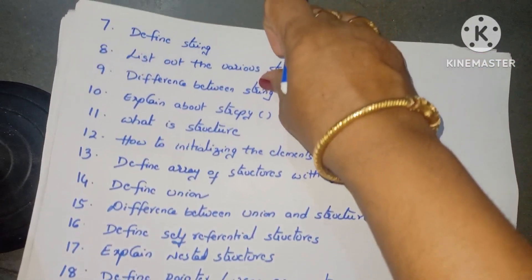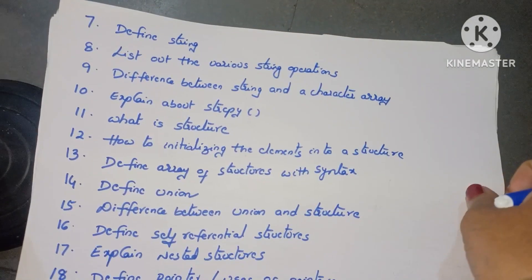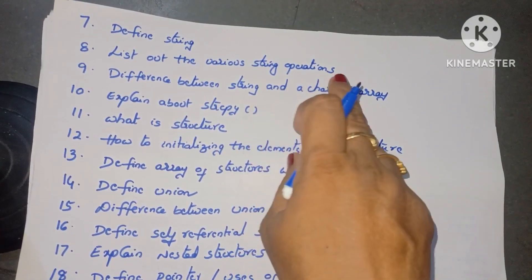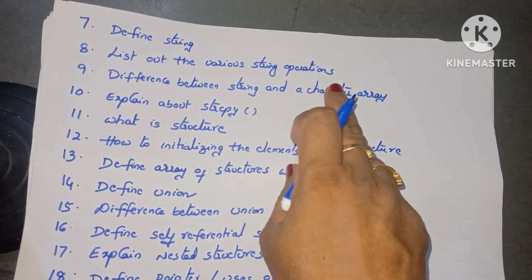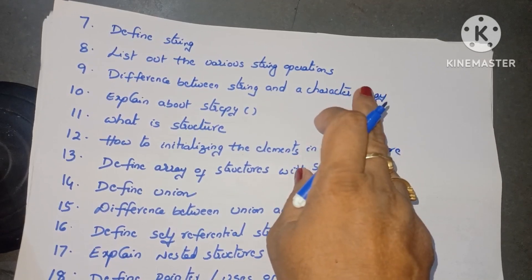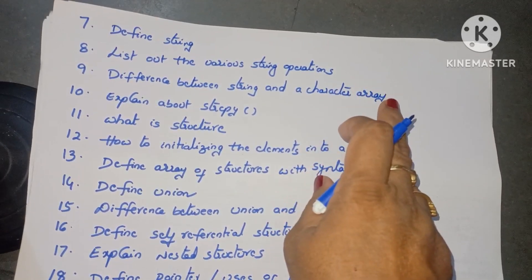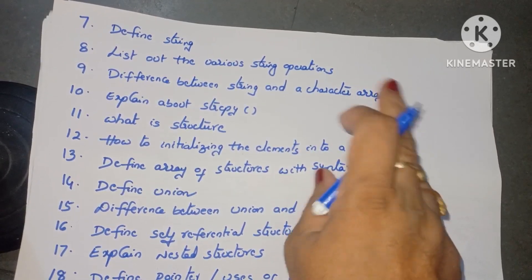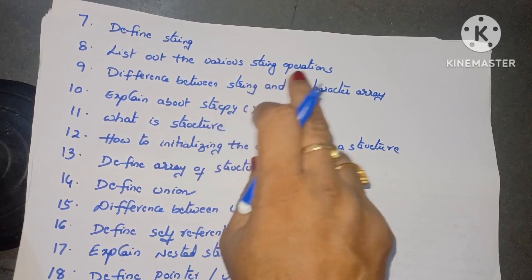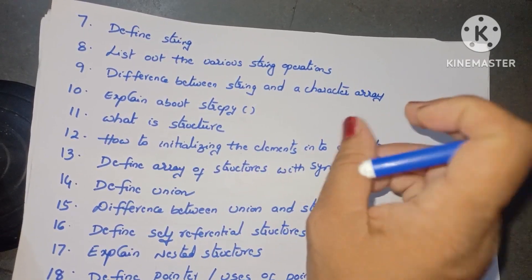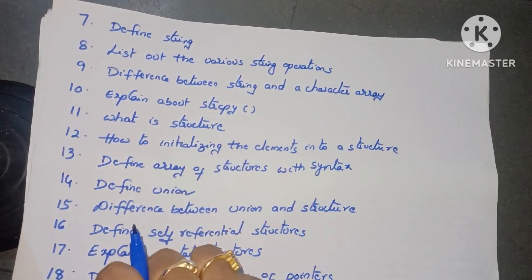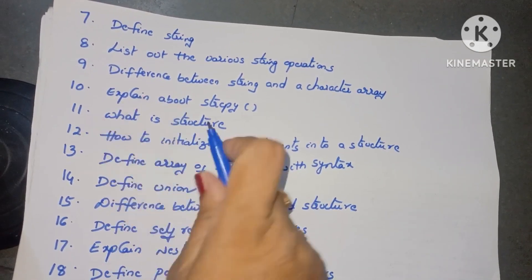The next topic is strings. First question is: define string — what is a string? Next: list out the various types of string operations. There are many string operations — just give the different types such as strlen, strreverse, strcat, strcpy, and similar functions.